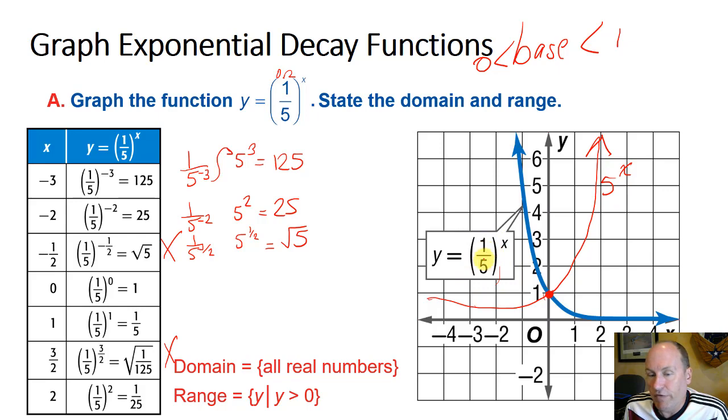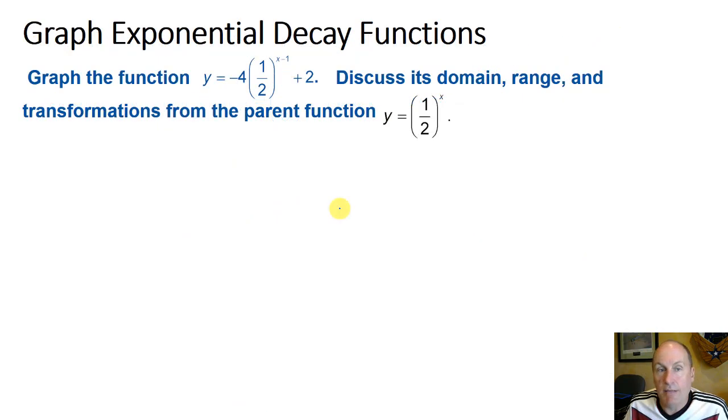Let's graph another more complex exponential decay function. y equals negative 4 times 1 half to the x minus 1, plus 2. Our base is 1 half, that tells us it's decay right there. This thing's got all kinds of transformations in it. Since the base is 1 half, or 1 over 2, we're going to compare it to the parent function, y equals 1 half to the x.